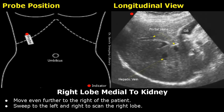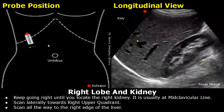Move even further to the right side of the patient while keeping the probe slightly rotated anticlockwise and you will see more of the right lobe of the liver. Sweep left and right to scan the right lobe completely. You will see the gallbladder, portal veins, and the hepatic veins.